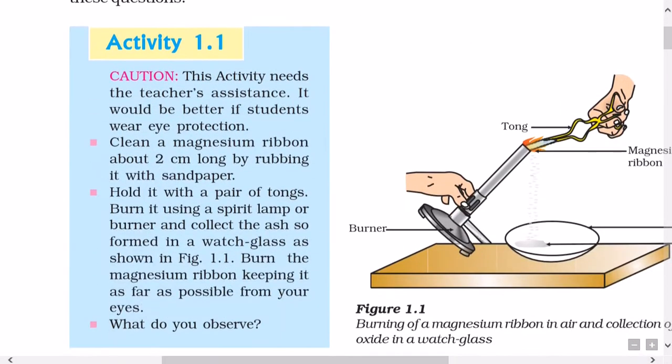Activity 1.1. Caution, this activity needs the teacher's assistance. It would be better if students wear eye protection. Clean a magnesium ribbon about 2 cm long by rubbing it with sandpaper. Hold it with a pair of tongs, burn it using a spirit lamp or burner, and collect the ash so formed in a watch glass. Burn the magnesium ribbon keeping it as far as possible from your eyes. What do you observe?